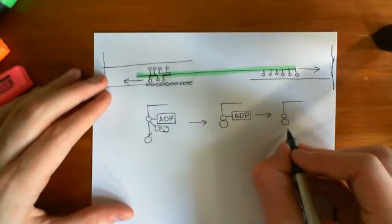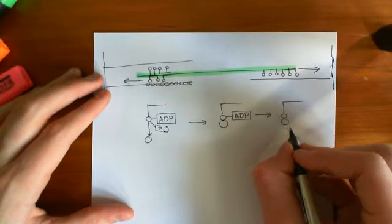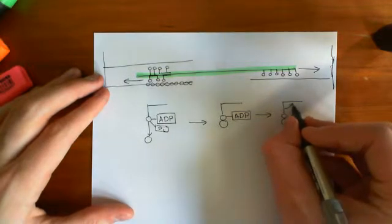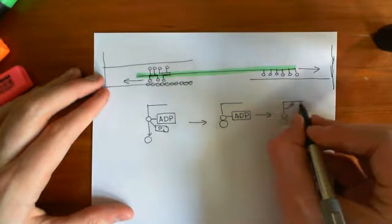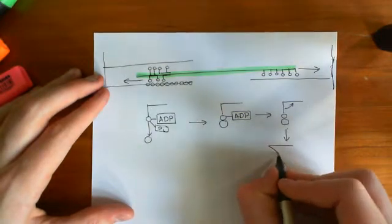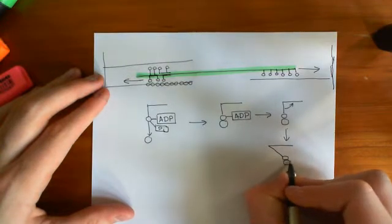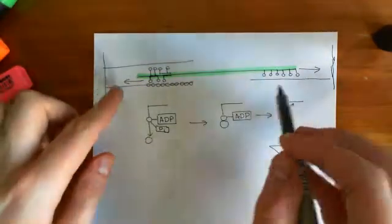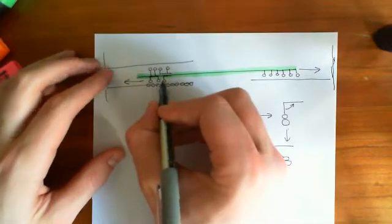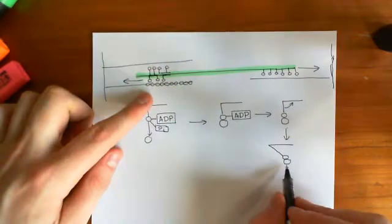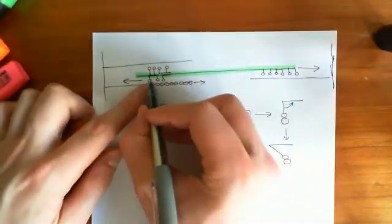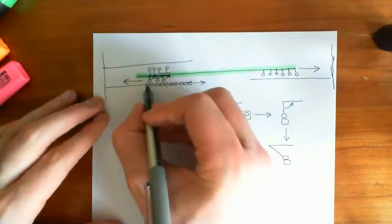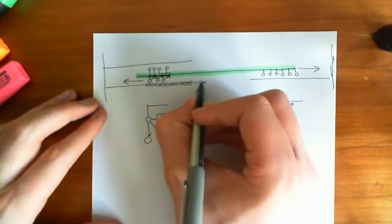Then it releases the ADP. When it releases the ADP, it does what's known as the power stroke — it changes conformation. This fibre, which is perpendicular to the other, is going to pull this way, and what you end up with is a tilted structure. If you can imagine on this bigger picture that all of these heads are doing the same thing — they're all going to push. They're pushing the actin filament this way. So this one here is going to tilt this way, this one here is going to tilt this way, and this one here is going to tilt that way.